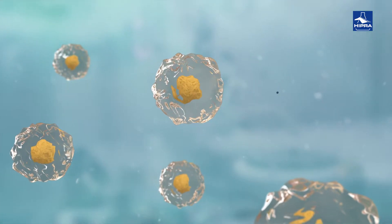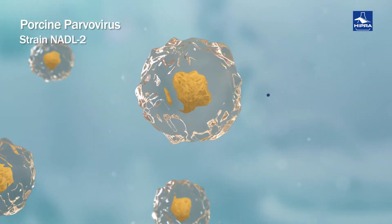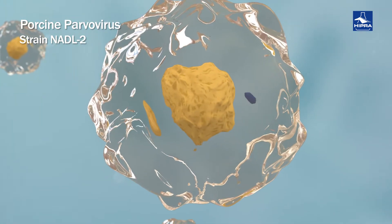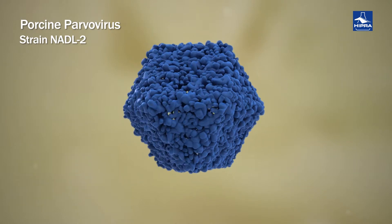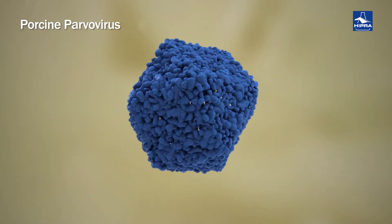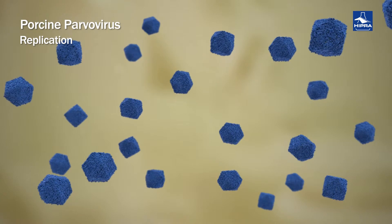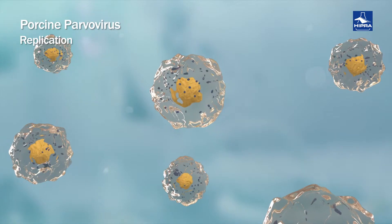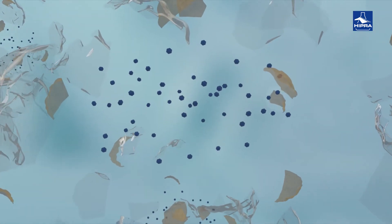In terms of the porcine parvovirus, the NADL2 strain is incorporated into the vaccine. The virus is inserted into a eukaryotic cell, where it replicates. Then, cell lysis or cell destruction takes place, leaving only the virus, which will elicit wide protection against porcine parvovirus.